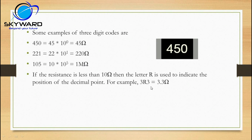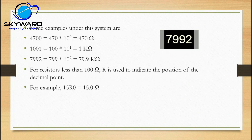In three-digit code, if the letter R is present, it represents the decimal point. When the resistance value is less than 10 ohm, the letter R is used to indicate the position of the decimal point. For example, 4R7 means 4.7 ohm.